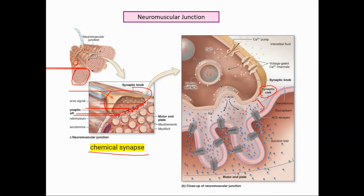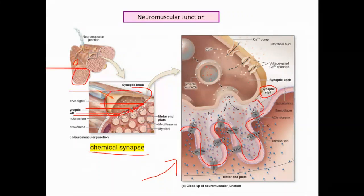At the synaptic cleft, the sarcolemma — the plasma membrane of the muscle fiber — forms invaginations where the synaptic knob is located. There is actually quite a distance for a molecule to travel across this cleft, because although the molecules are very small, it is still a cleft that they have to traverse.